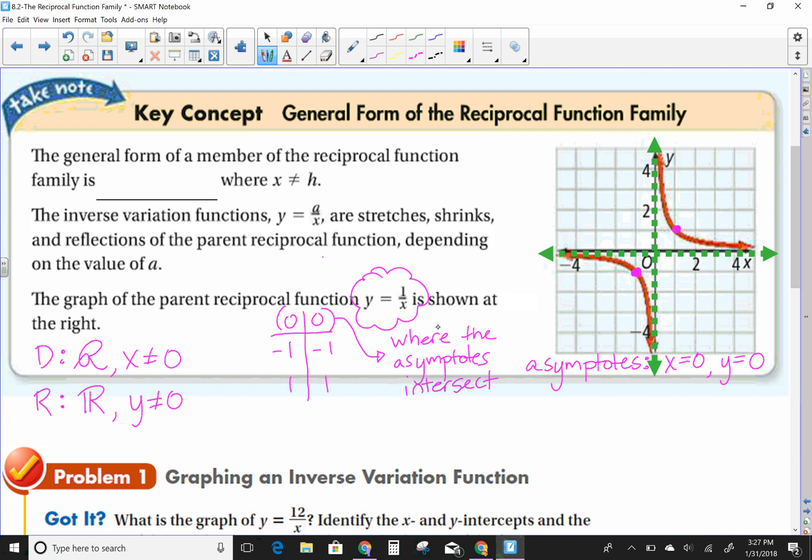And so the other kind of changes that we're going to do are everything that we've talked about before. So that's y equals a times 1 over x minus h plus k. We know that h talks about shifting our graph horizontally. k talks about shifting our graph vertically. And a is that vertical stretch.